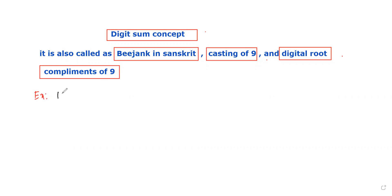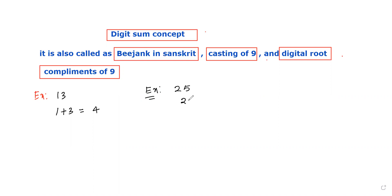Let us take the number 13. If you want to find the DigitSum of 13, you have to add all the digits: 1 plus 3, that gives 4. So 4 is the DigitSum of 13. Another example: for 25, the DigitSum is 2 plus 5, which equals 7. So 7 is the DigitSum of 25.